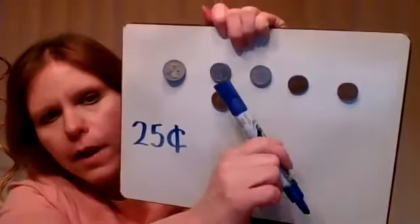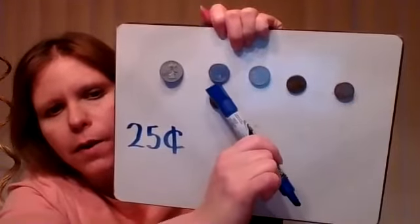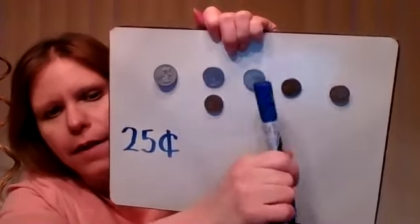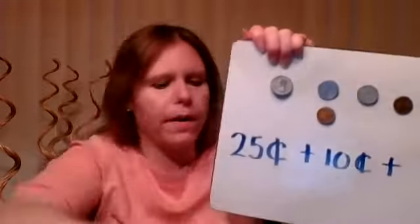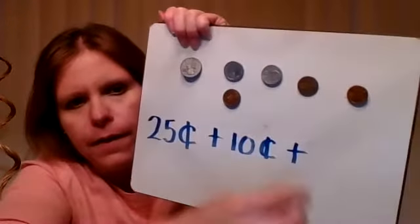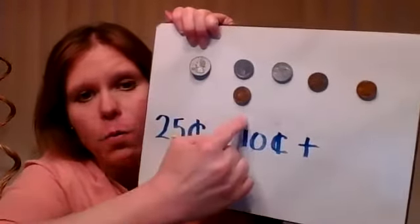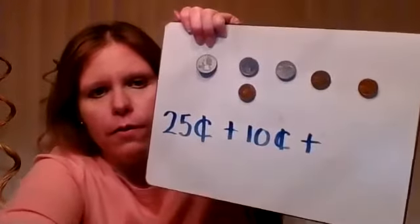Now let's look at the nickels — looks like we have a couple of nickels. And over here I see some pennies: one, two, three pennies. So if a penny is worth one cent, that means we have three cents worth of pennies.